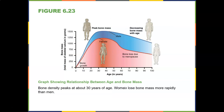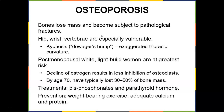A graph of age versus bone mass shows males peak in their 20s, females in their early-to-mid 20s to 30s, after which bone mass declines — especially in females. Thin Caucasian and thin Asian women are particularly susceptible to osteoporosis. The hip, wrist, and vertebrae are especially vulnerable, and kyphosis — the 'dowager's hump' — is an exaggerated thoracic curvature. Declining estrogen post-menopause results in less inhibition of osteoclasts.